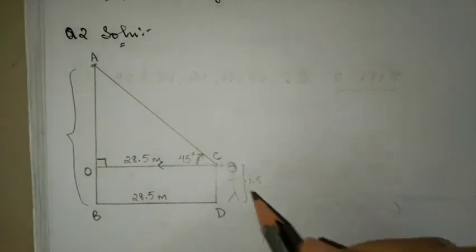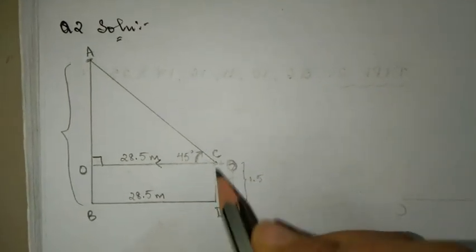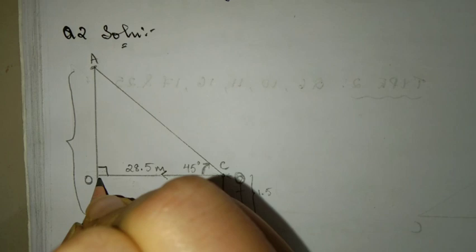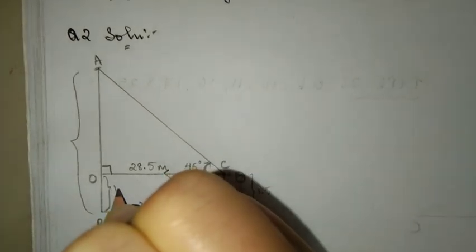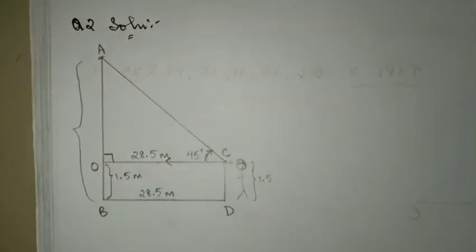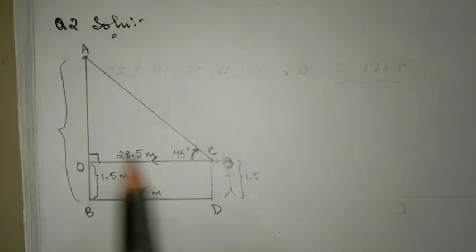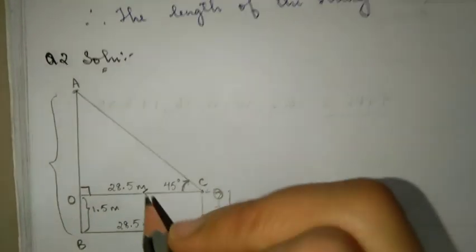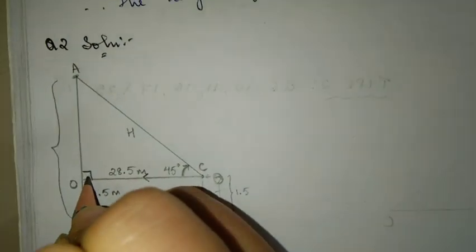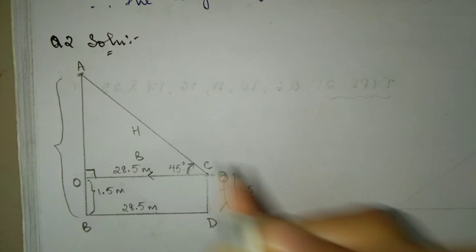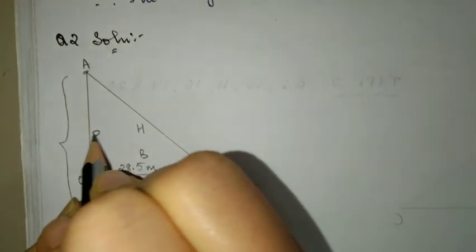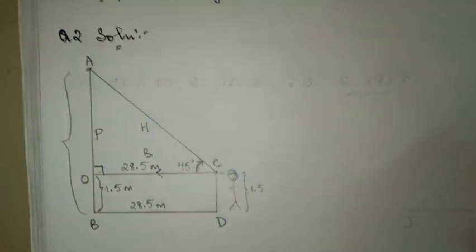If this much is 28.5, then the opposite side will also be 28.5 meters. Similarly, if this much is 1.5, then the opposite side OB will also be 1.5. Let's name the sides of the triangle. This side is opposite to the right angle - hypotenuse. This side has both 45 degree and 90 degree, so it's base. The other one is perpendicular.